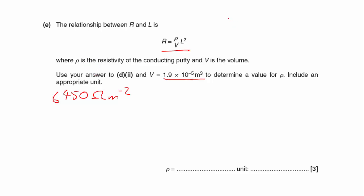What we needed to realize with this is we had a graph of R against L squared, and we had a straight line. According to this relationship, it would have gone through the origin. R is on the y-axis, L squared is on the x-axis, so that means that rho over V is the gradient.